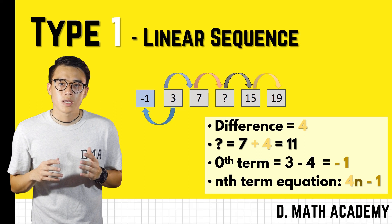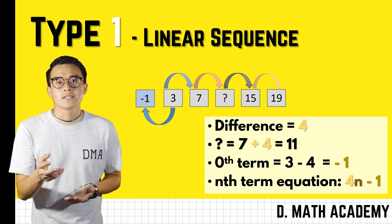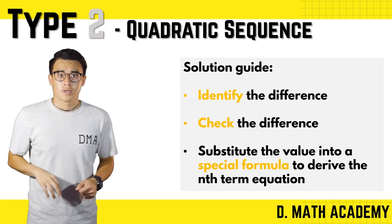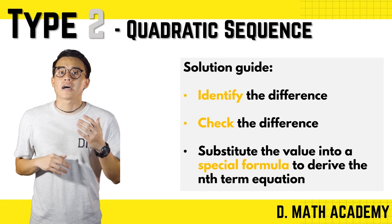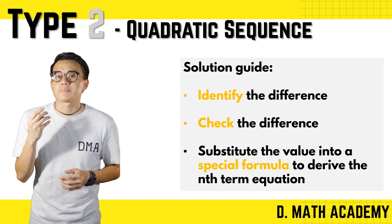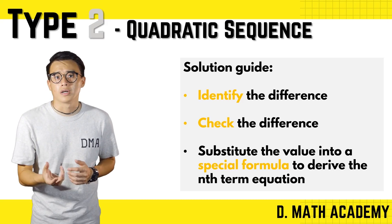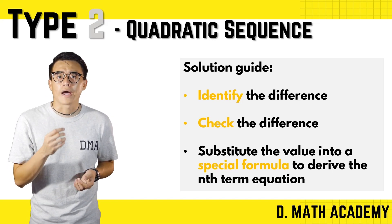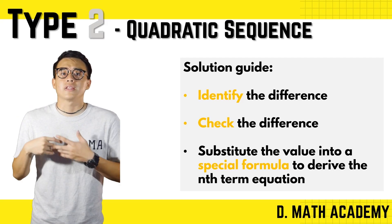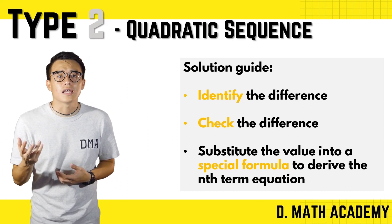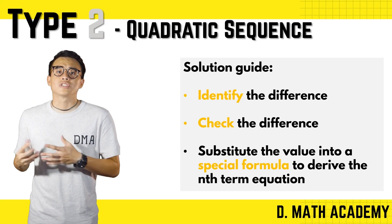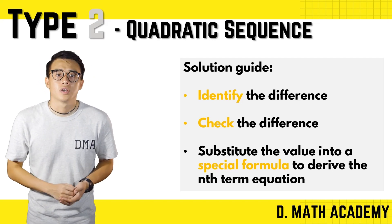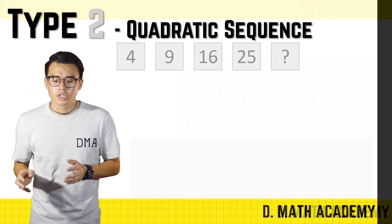That's all for linear sequences. Moving on to quadratic sequences — these are harder than linear, but the steps are similar. First, identify the differences. Next, check by computing the differences twice. If a certain condition is fulfilled, you can substitute the values into a specific formula to derive the n-term equation.